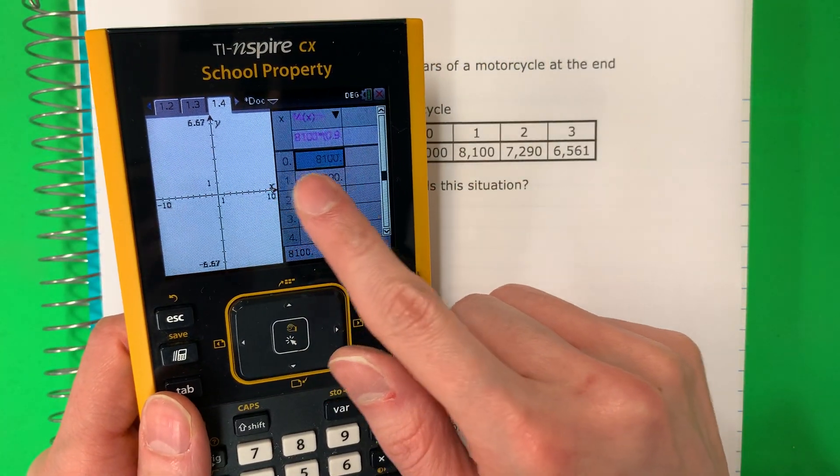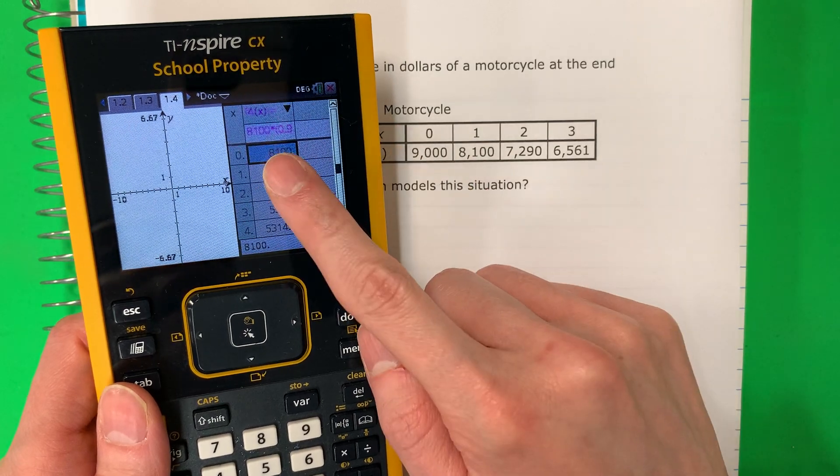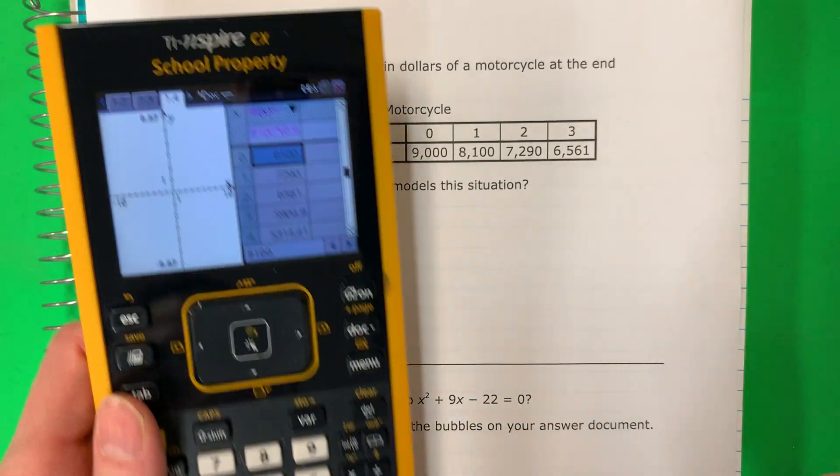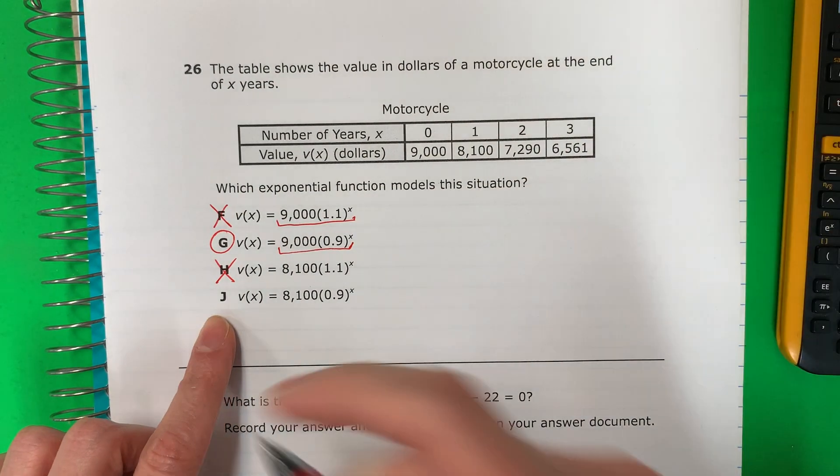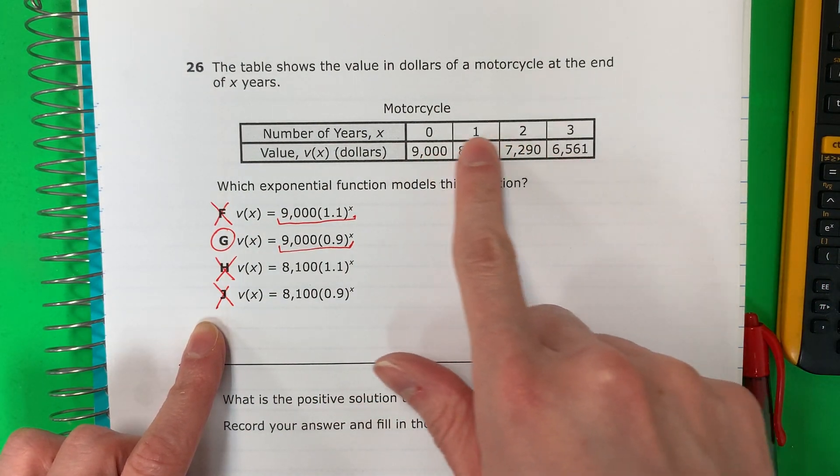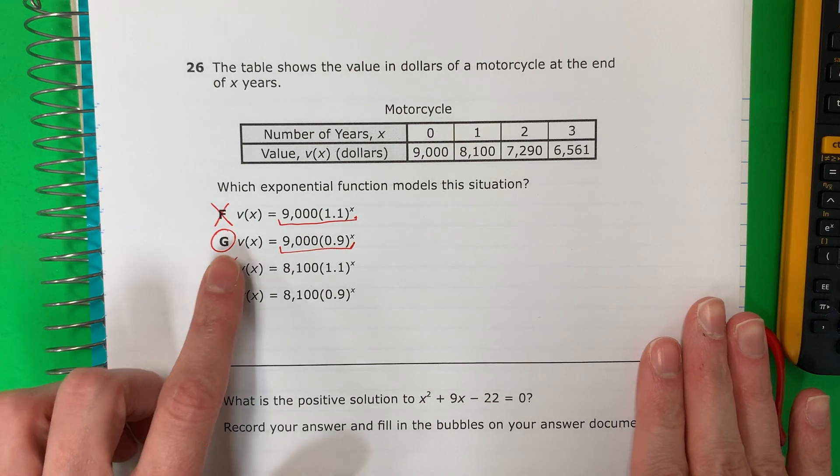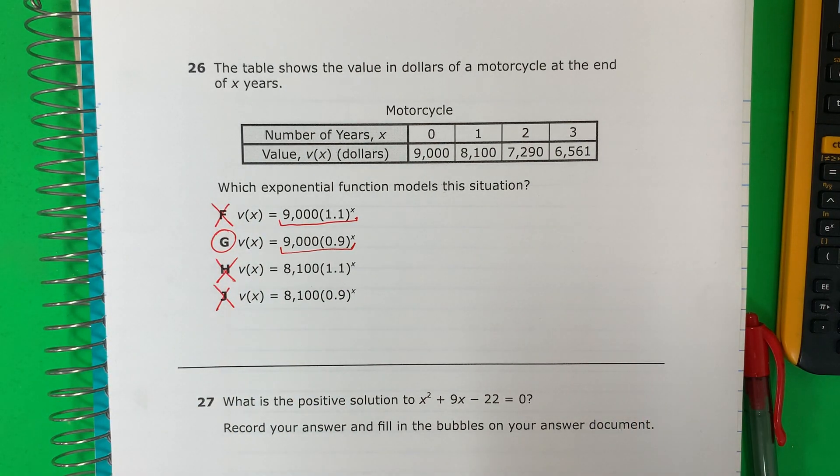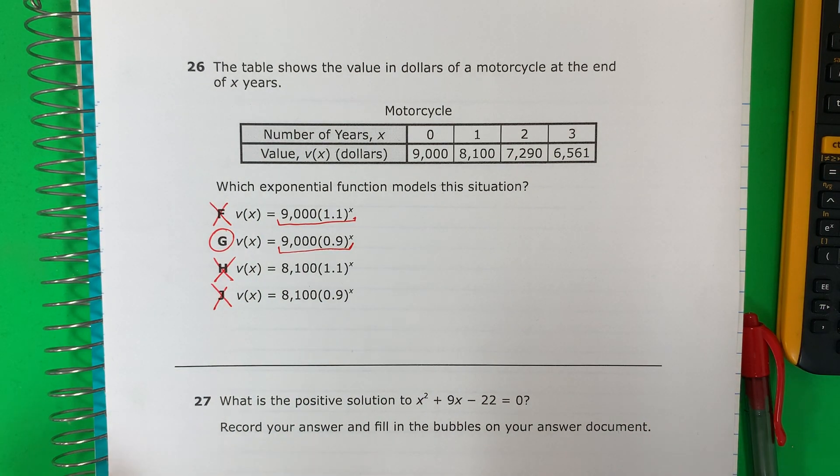Here's 0, 8,100. Here's 0, 9,000. That is different. Diferente. So that is not my answer. Okay. So remember, you need them all the same. Recuerda que necesito todos iguales. So your answer is G. La respuesta es G. Thanks for watching. Please subscribe and leave a comment.